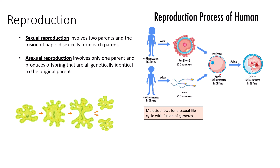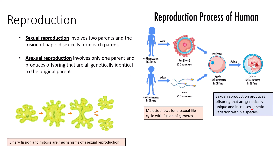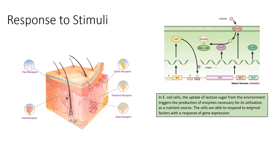Meiosis allows for a sexual life cycle by dividing chromosomes in half to produce haploid gametes, giving the organism the ability to fuse those gametes to produce a viable diploid embryo. Sexual reproduction produces offspring that are genetically unique and increases genetic variation within a species. Asexual reproduction does not increase genetic variation because it produces identical copies of the parent. Genetic variation from sexual reproduction is important for the long-term viability of a species. Binary fission, mitosis, budding, and fragmentation are all mechanisms of asexual reproduction.